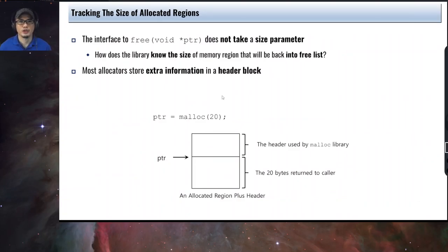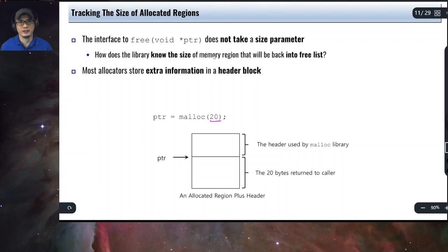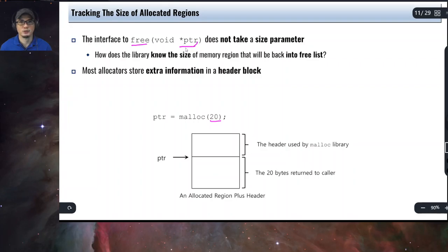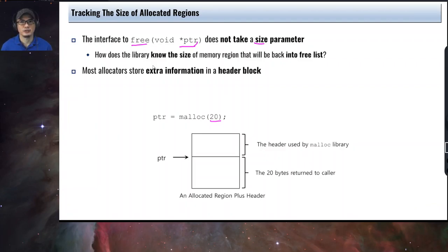The next mechanism is tracking the size of allocated regions. Why is this important? Remember that in the malloc interface you specify the number of bytes to allocate, but in the free interface you do not specify any sizes — it only specifies the pointer or address. So free does not take a size parameter. How then does the library know the size of the memory region to be placed back into the free list?